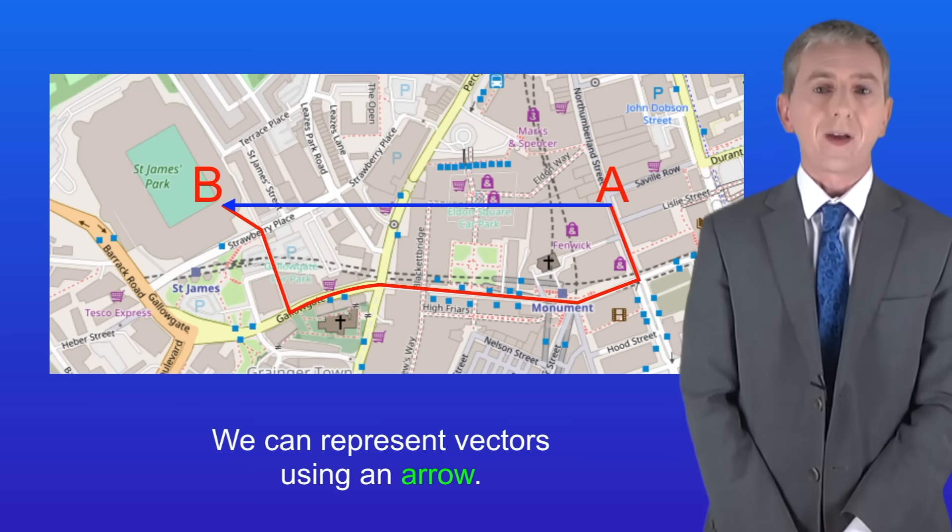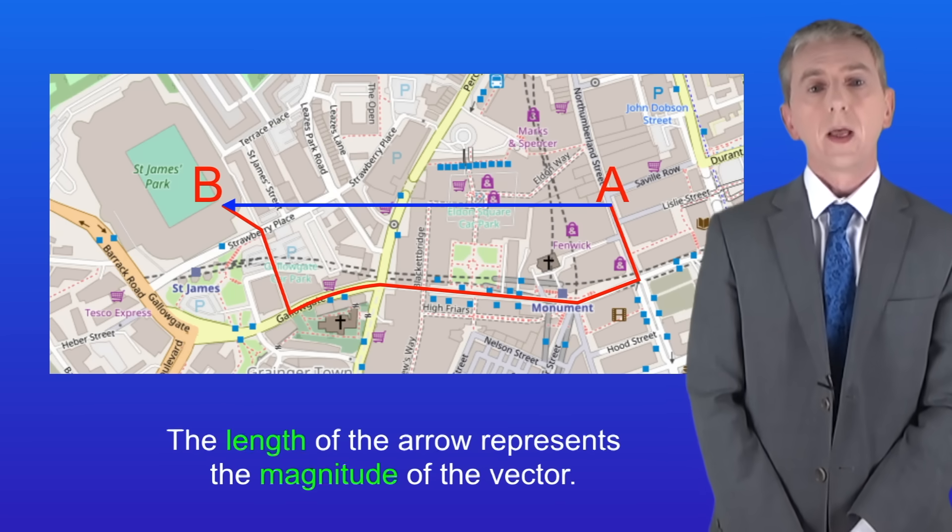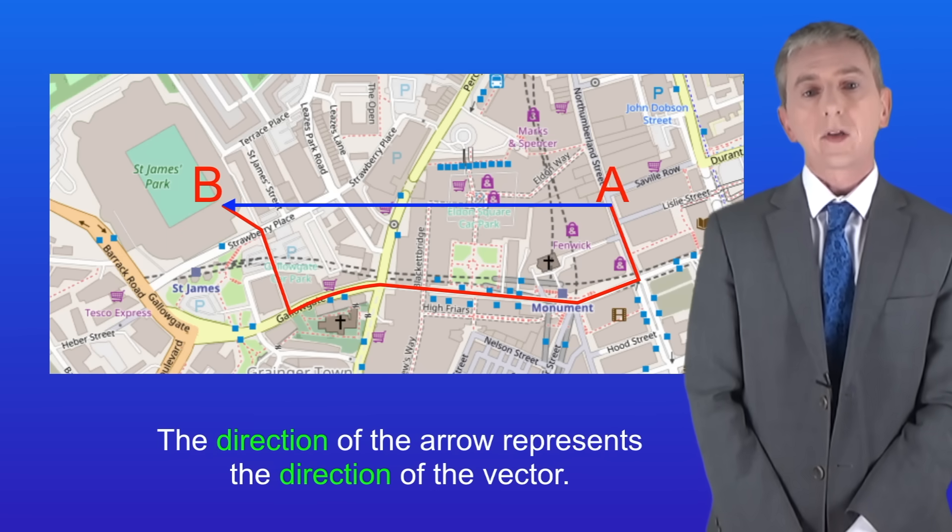Now we can represent vectors using an arrow, and I've done that with displacement on this map. The length of the arrow represents the magnitude of the vector, and the direction of the arrow represents the direction of the vector.